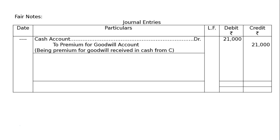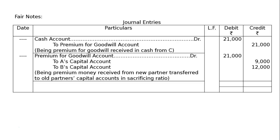Being premium for goodwill received in cash from C. And this premium money — this is not the only entry to be passed. There will always be two entries: Cash to Premium, then Premium to A and B. Hence, Premium for Goodwill account debited Rs. 21,000, to A's capital account Rs. 9,000 and to B's capital account Rs. 12,000. Being premium money received from new partner, transferred to old partners' capital accounts in sacrificing ratio. The journal is to be totaled, and the totaling of both debit and credit side is Rs. 42,000 each.